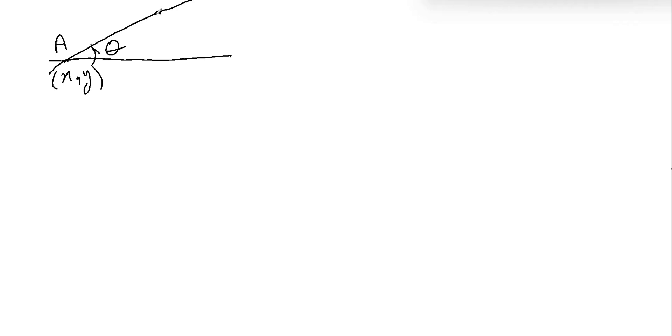Suppose we want to find the coordinates of point B which is at a distance d from A. So the coordinates of this point become x plus d cos theta, y plus d sin theta.